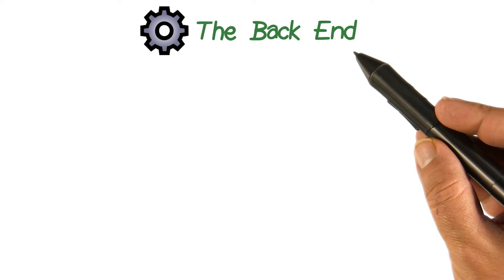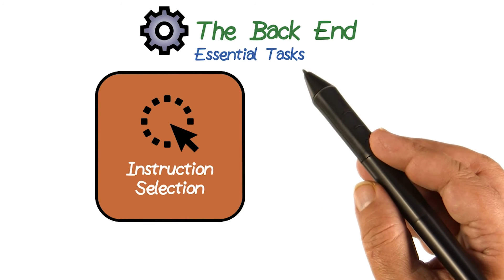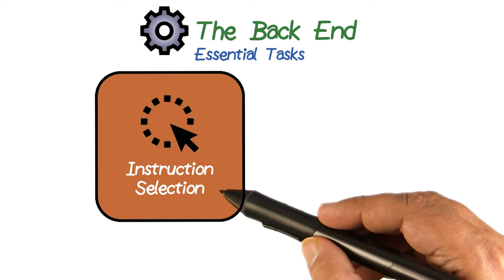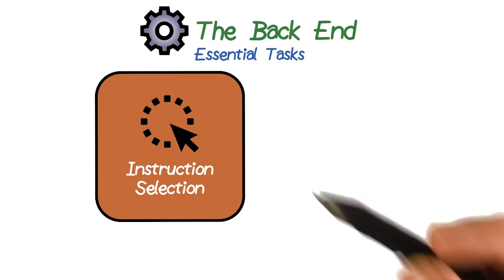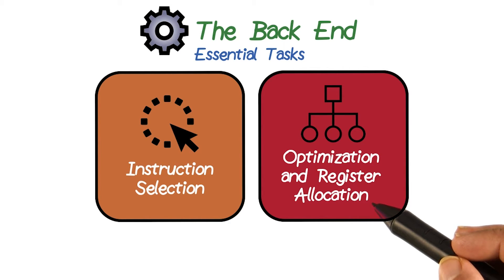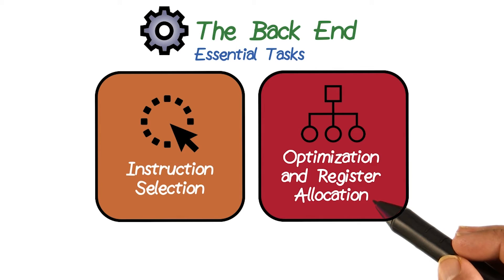Let's take a look at what exactly that black box back end really means and what are the essential tasks which are supposed to be there in that back end. The first one is instruction selection. The second one is optimization and register allocation — a very important task for bringing values from memory, keeping them in registers as much as we can, operating on those values, and then storing the results back into memory. For RISC architecture, this phase is really critical.